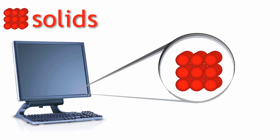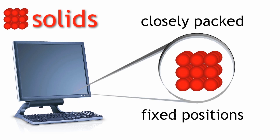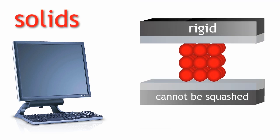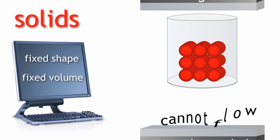In a solid the particles are closely packed in fixed positions and cannot move anywhere. So, solids are rigid, cannot be squashed or compressed, have a fixed shape and a fixed volume. They cannot flow.